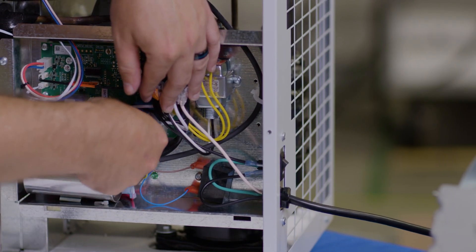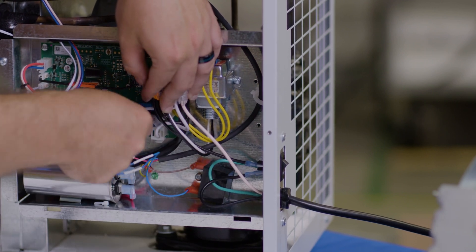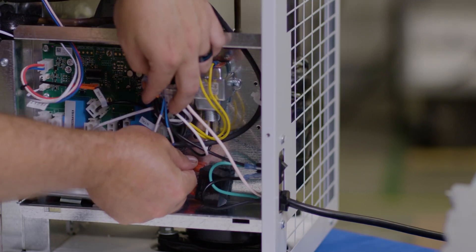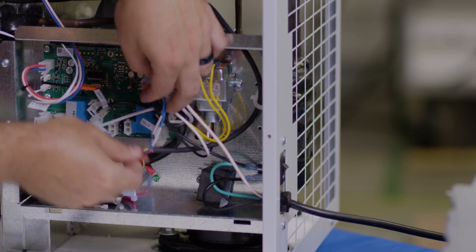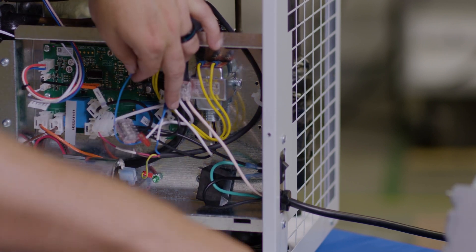First remove the red and blue plugs connected to the circuit board. Then remove the two connectors from the capacitor. And finally remove the ground wire using your drill and Torx bit.